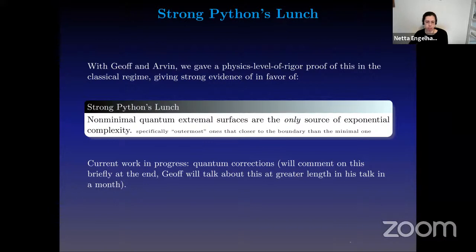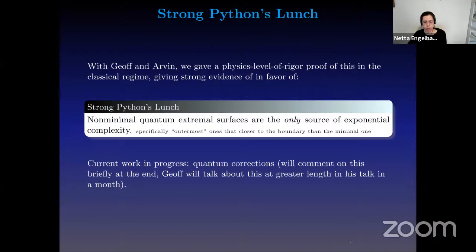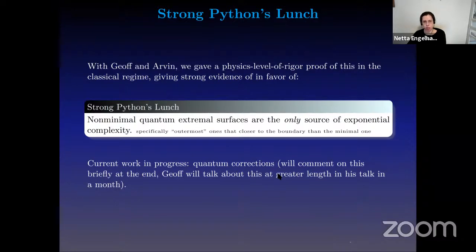When I say non-minimal ones, I mean in particular the outermost one. We also have current work in progress that includes quantum corrections, which is quite a different situation, because once you include quantum corrections, the quantum extremal surface can behave quite differently from a classical extremal surface. You can have non-trivial quantum extremal surfaces even in spacetimes that have no non-trivial classical extremal surfaces. Jeff is actually giving a talk in a month at the same seminar series, so I decided that Jeff is going to talk about this current work in progress, and I will talk about what we have done so far. For those of you with questions on the quantum case, I'll say a few words at the end, and then there'll be a more in-depth talk in a month.